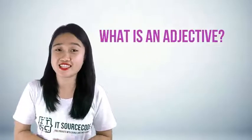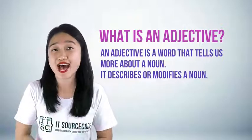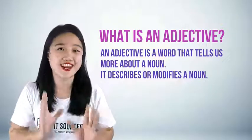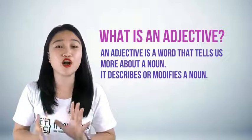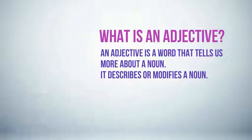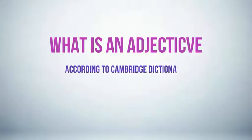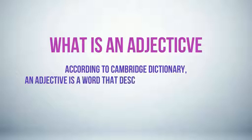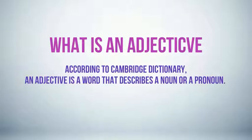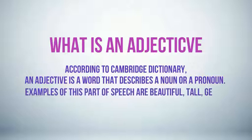First, let us define what an adjective is. An adjective is a word that tells us more about a noun — it describes or modifies a noun. According to Cambridge Dictionary, an adjective is a word that describes a noun or a pronoun. Examples of this part of speech are beautiful, tall, genuine, and oily.